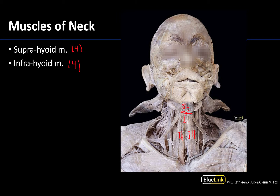Some of the infrahyoid muscles actually have a connection to the thyroid cartilage, which is part of the larynx. So if we were to reflect the infrahyoid muscles, you could see the larynx and the thyroid gland underneath. There are a lot more structures associated with deep to the infrahyoid muscles.